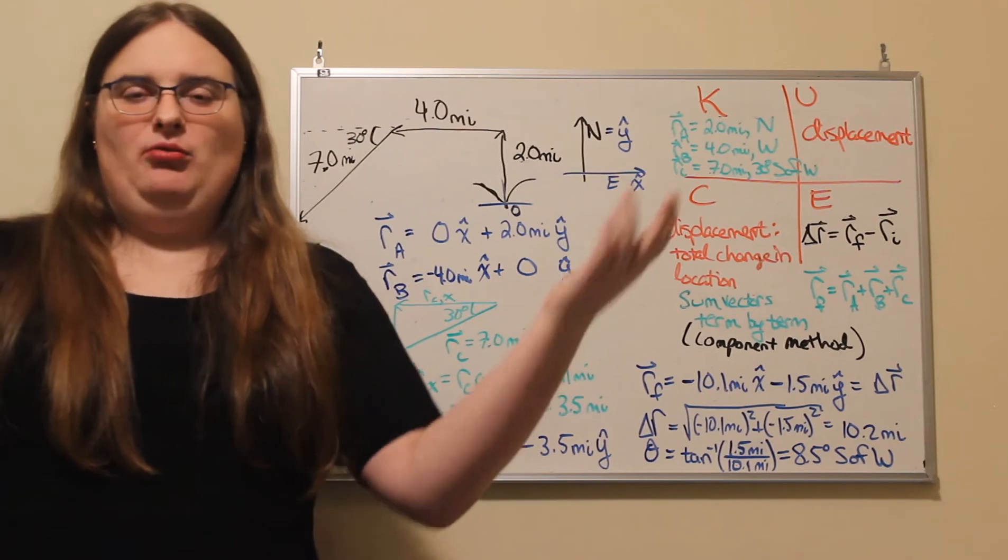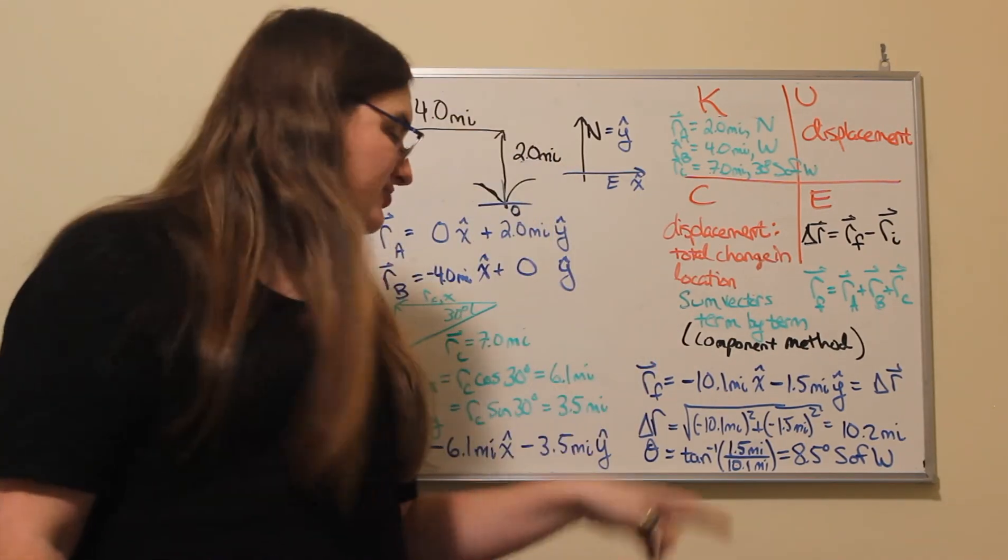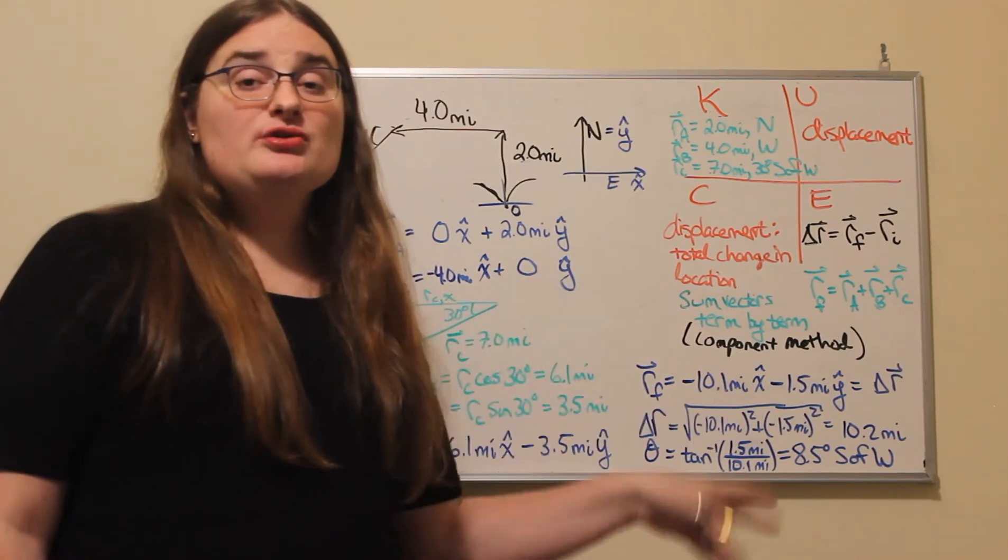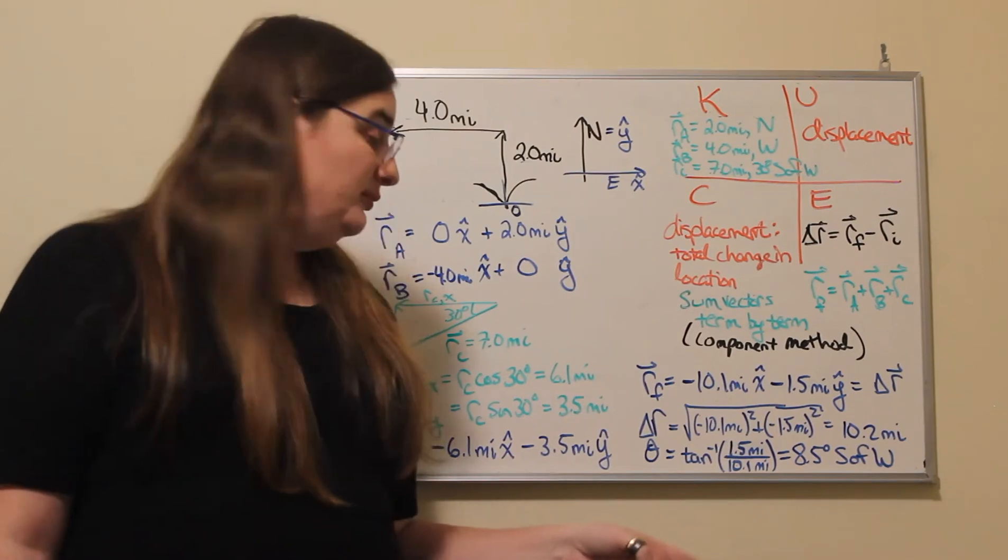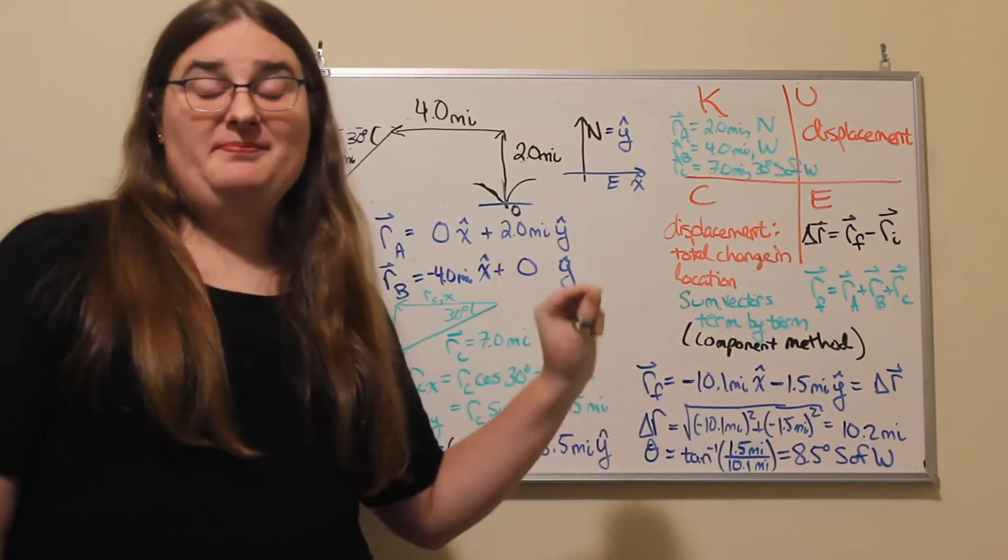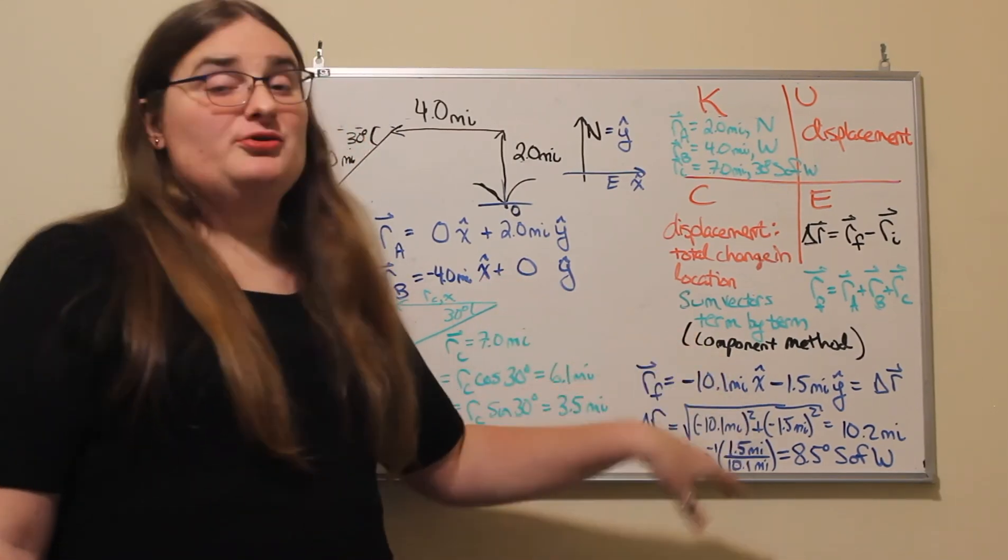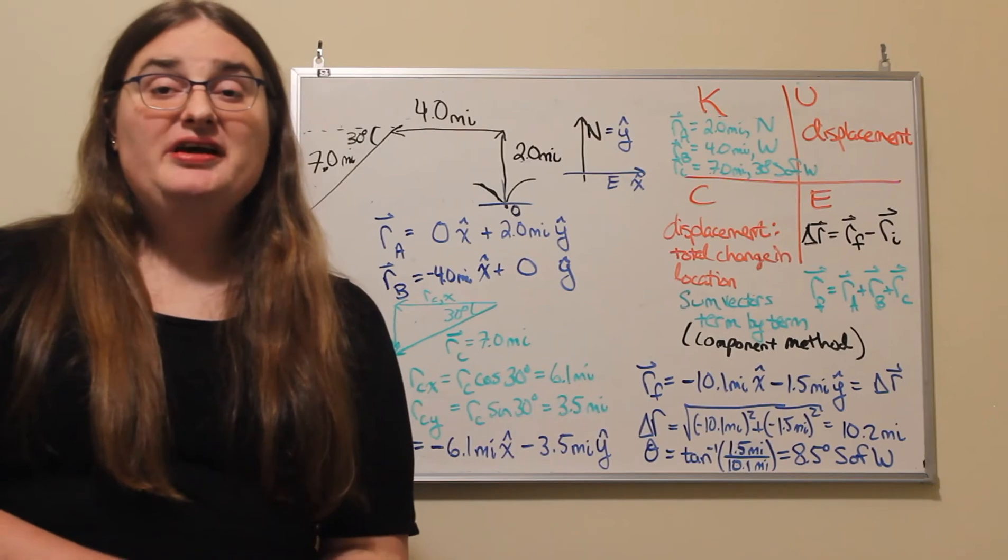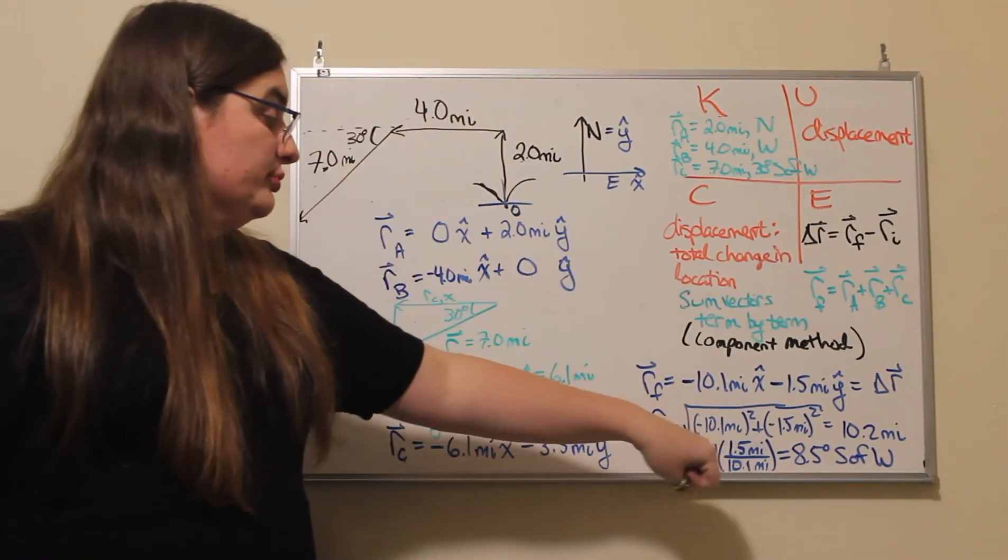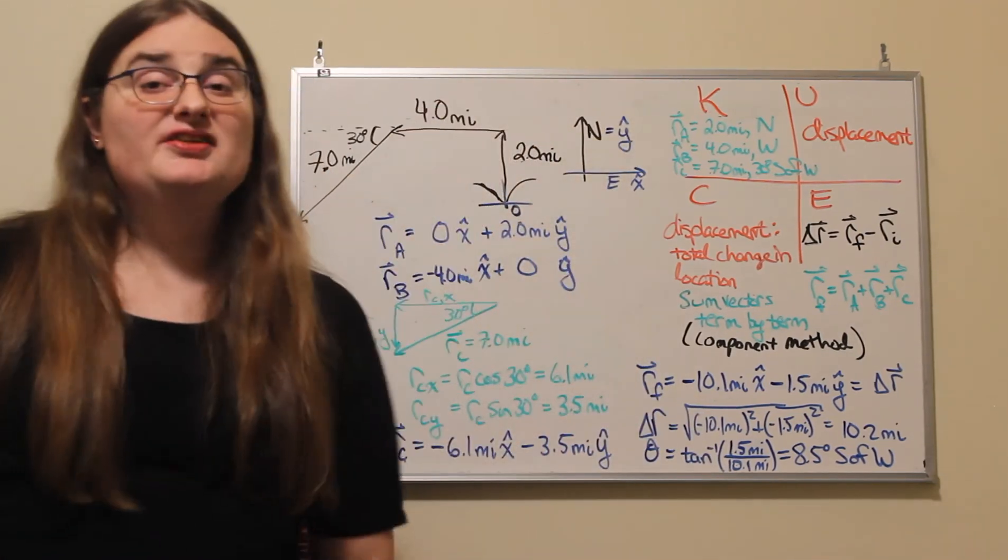Because those units cancel out. But it'll also ignore those two minus signs and cancel them out and say, oh, do you mean the tangent of plus 1.5 divided by the tangent of 10.1, those sort of positive values? The difference is our result is in the third quadrant, where if it was truly plus 1.5 and plus 10.1, it's in the first quadrant. Some calculators, some computer programs will pay attention to the negative signs and will give you a result between either 0 and 360 degrees, or plus 180 degrees to negative 180 degrees.